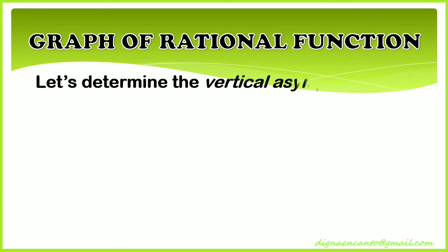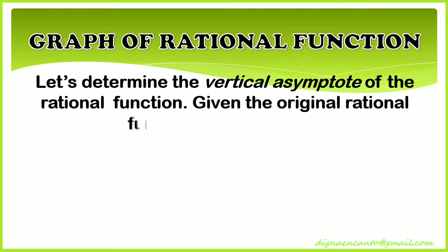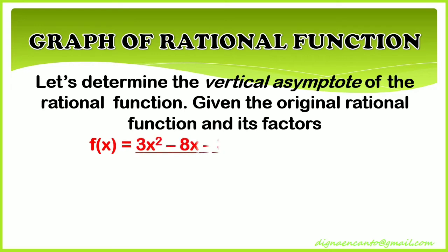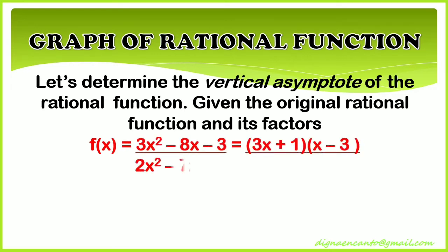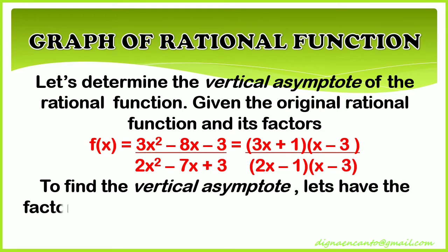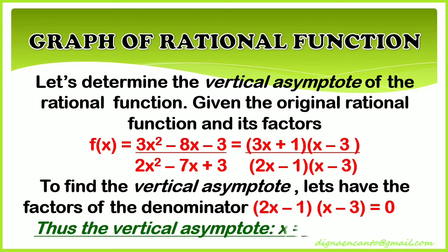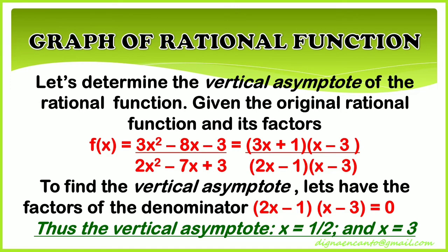Let's determine the vertical asymptote of the rational function given the original rational function and its factors. To find the vertical asymptote, set the factors of the denominator equal to 0: (2x - 1)(x - 3) = 0. Thus the vertical asymptotes are x = 1/2 and x = 3.